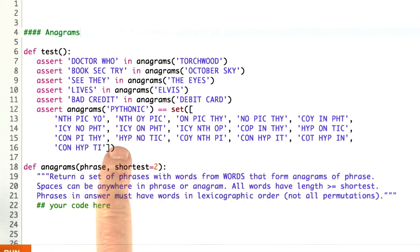I notice here that we have 'hypno tic', but not 'hypnotic' because 'hypnotic' happened not to be in our dictionary even though 'hypnotic' is an anagram of 'pythonic'.